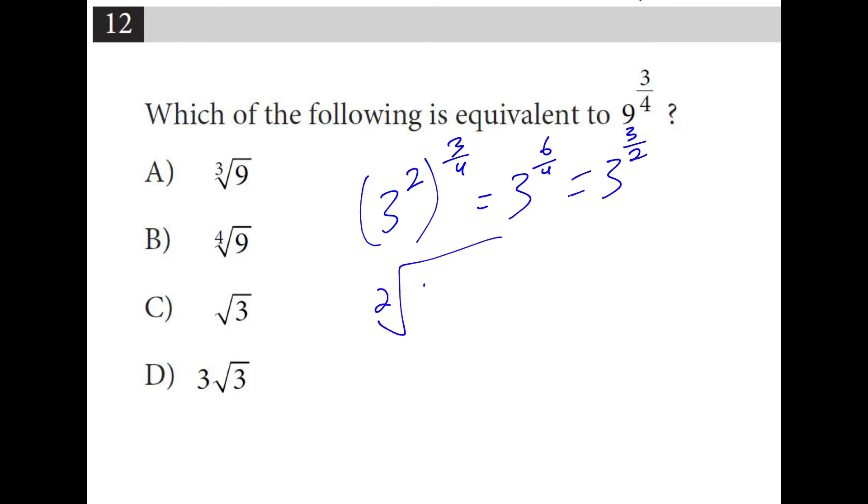So if I take the square root of 3 cubed, I can also write this as the square root of 3 squared times the square root of 3, because the square root of 3 squared is just 3, and the only thing left is root 3.